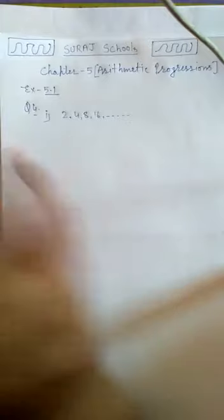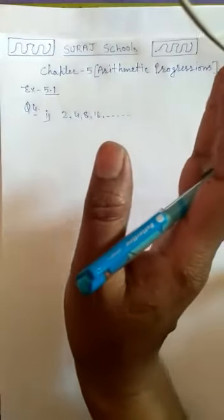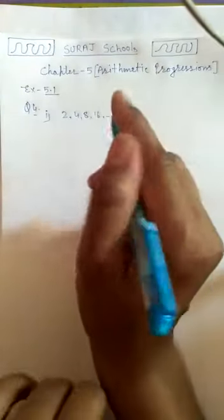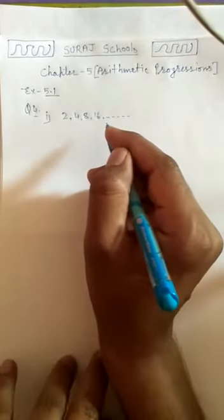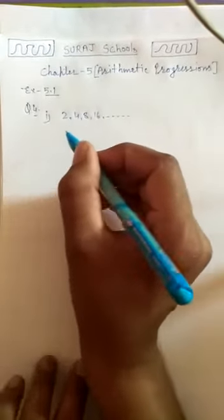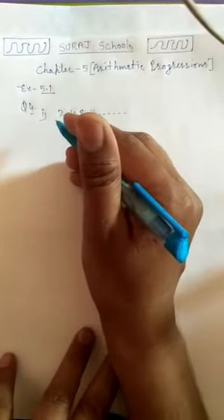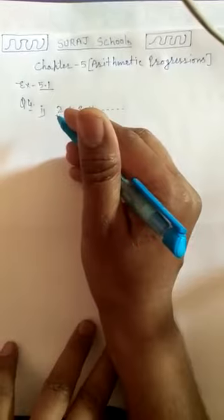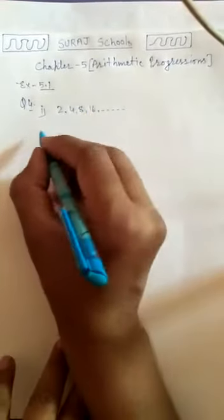If they form an AP, then find the common difference D and write three more terms. So first of all, we decide whether it is an AP or not.